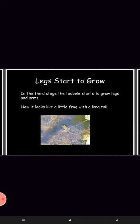Legs start to grow. In the third stage, the tadpoles start to grow legs and arms. Now it looks like a little frog with a long tail.